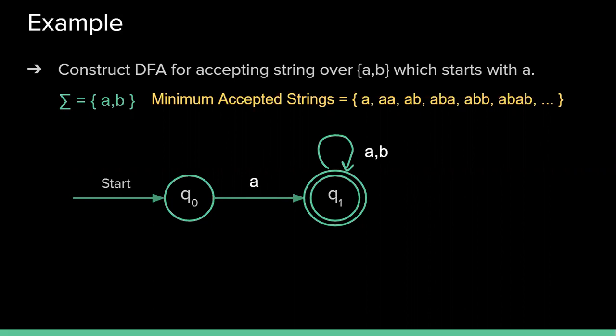So now with this DFA we have shown the transition of a,b for q1 so it is over, but for q0 we have shown the transition only for a. So what about b? They have given us we have to start only with a.